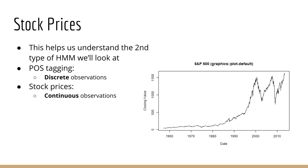Let's now go to our second example: stock prices. By the way, I chose these two examples because they cover the two kinds of HMMs we're going to talk about in this course. The previous example is an example of a discrete HMM — words are discrete categorical objects. Stock prices are continuous-valued, and so this will be an example of a continuous observation HMM.